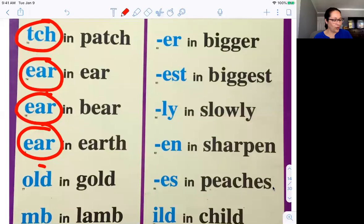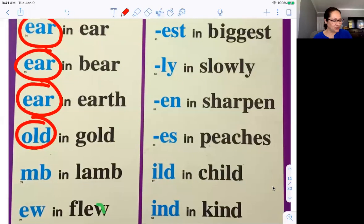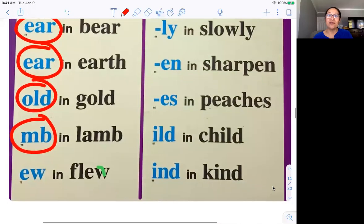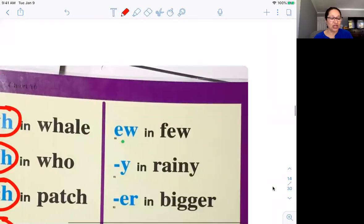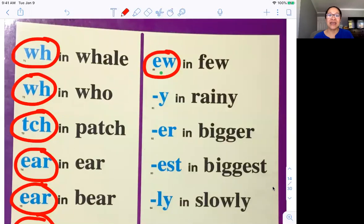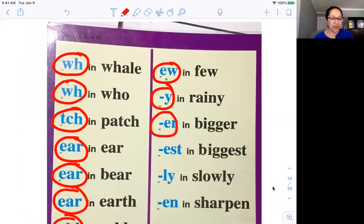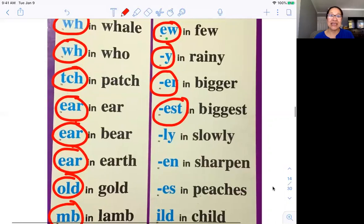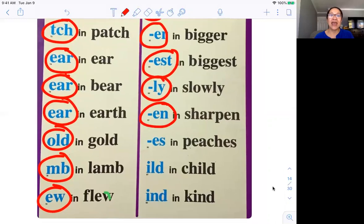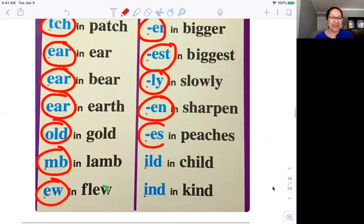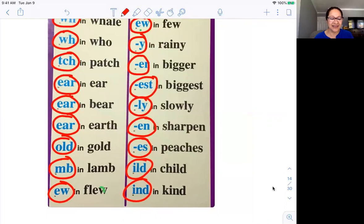Old in gold, O-L-D. M in lamb, M-B. Ew in flew, E-W. Ew in few, E-W. Y in rainy, Y. Er in bigger, E-R. Est in biggest, E-S-T. Ly in slowly, L-Y. En in sharpen, E-N. Es in peaches, E-S. Ild in child, I-L-D. Ind in kind, I-N-D. Very good, guys.